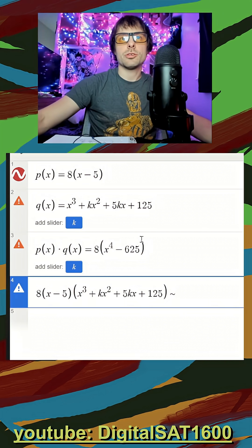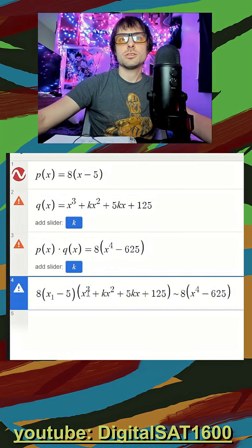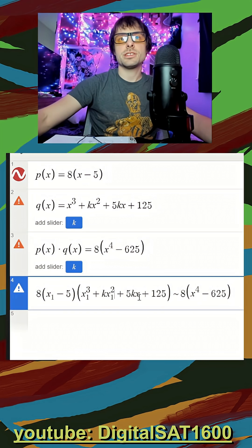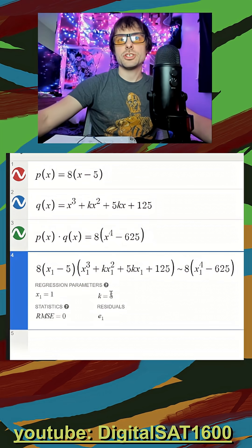And then our regression to this, because it should be equal to it, and then all I have to do is change my x to x1, and we should see what our value of k here is. And there's our regression, our k is 5.